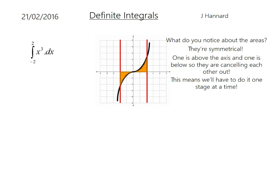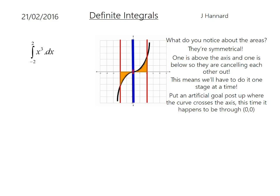So we'll have to do it one stage at a time and stick an artificial goalpost where the curve crosses the axis. And this time, it just happens to be through the origin right here. But it's not always that, so just be wary. But there's our artificial goalposts. And now we have two stories.